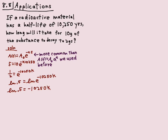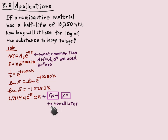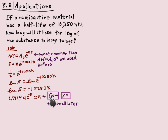I wrote k in scientific notation, but the smart thing to do is use your calculator: compute ln(0.5) divided by 10,250, and store the result in memory — use the STORE function and save it to x. If you don't know how to use memory on your calculator, search online for memory with your calculator's name and follow an example.